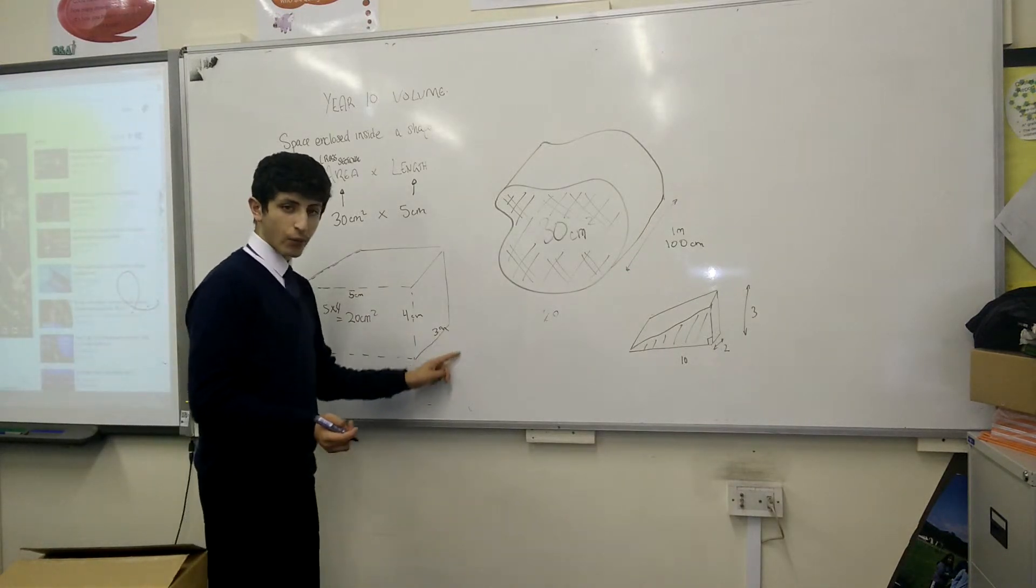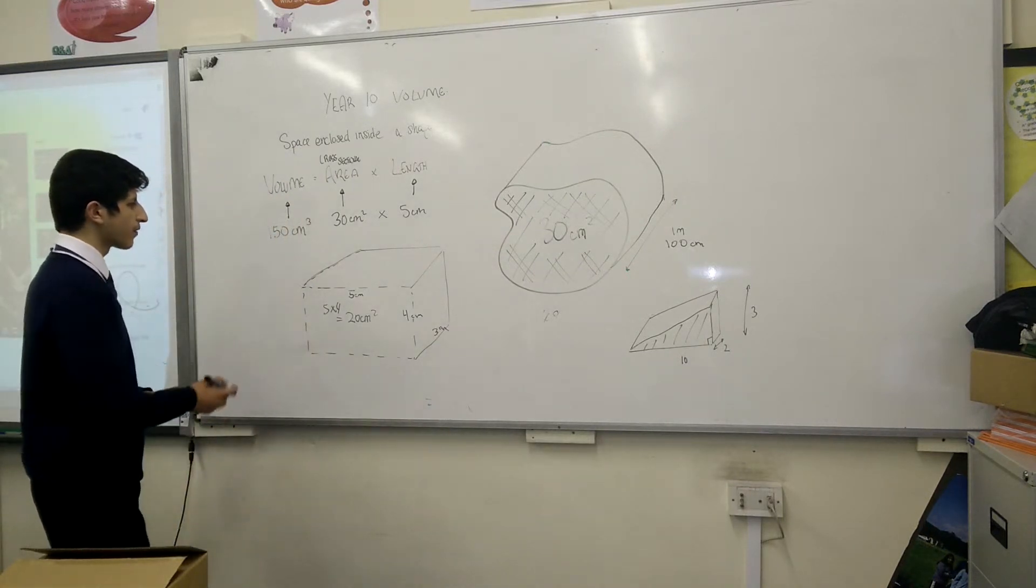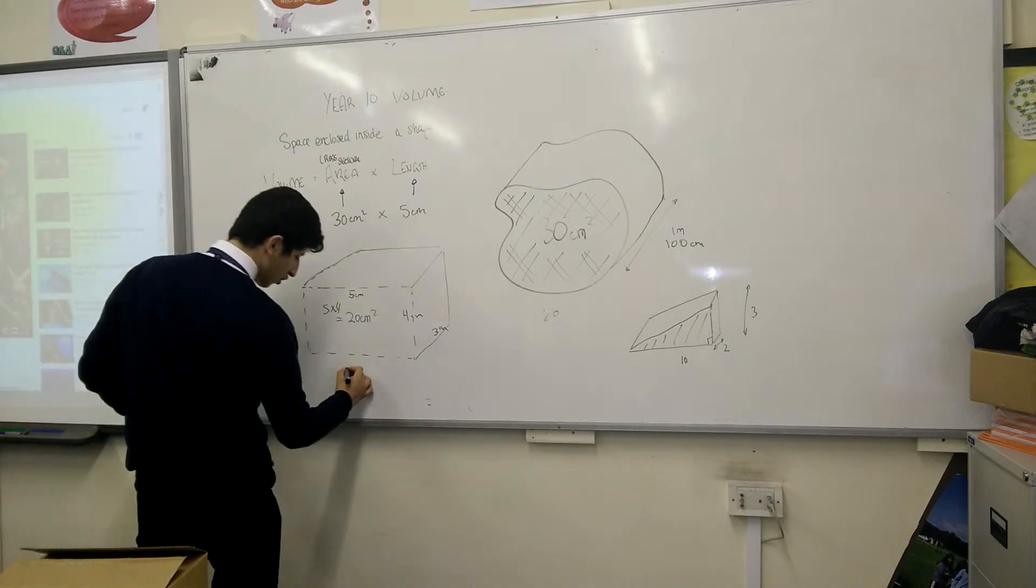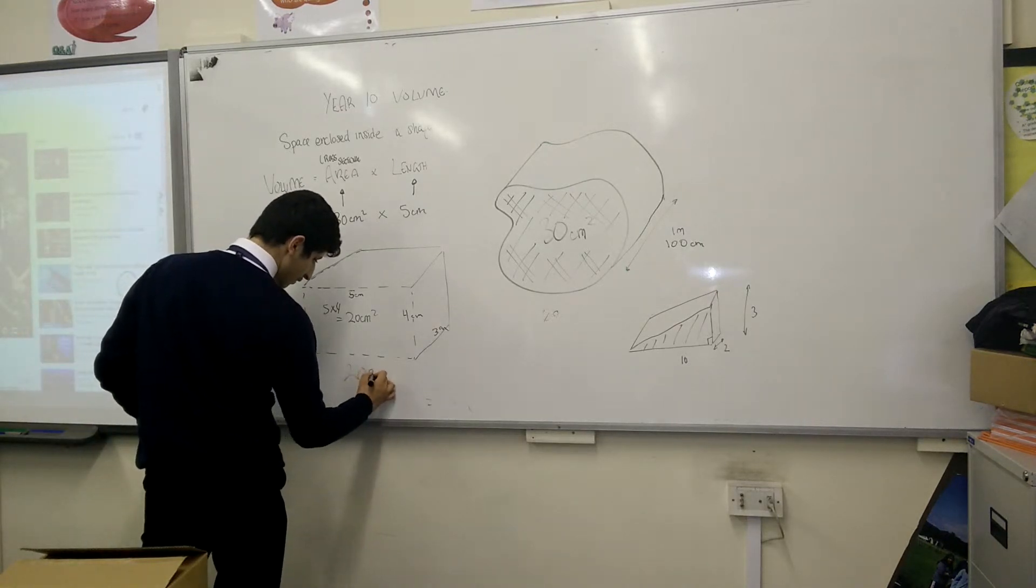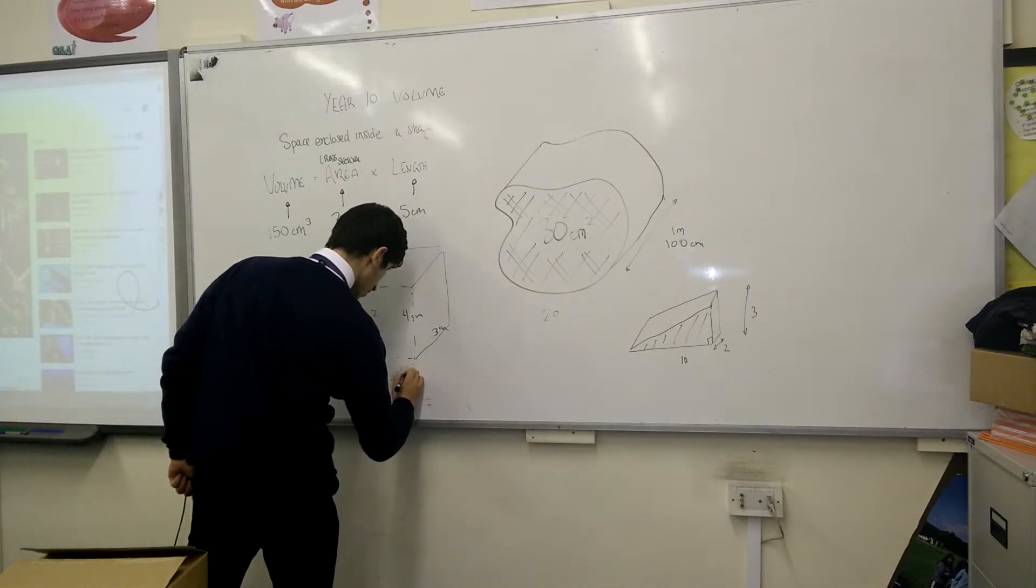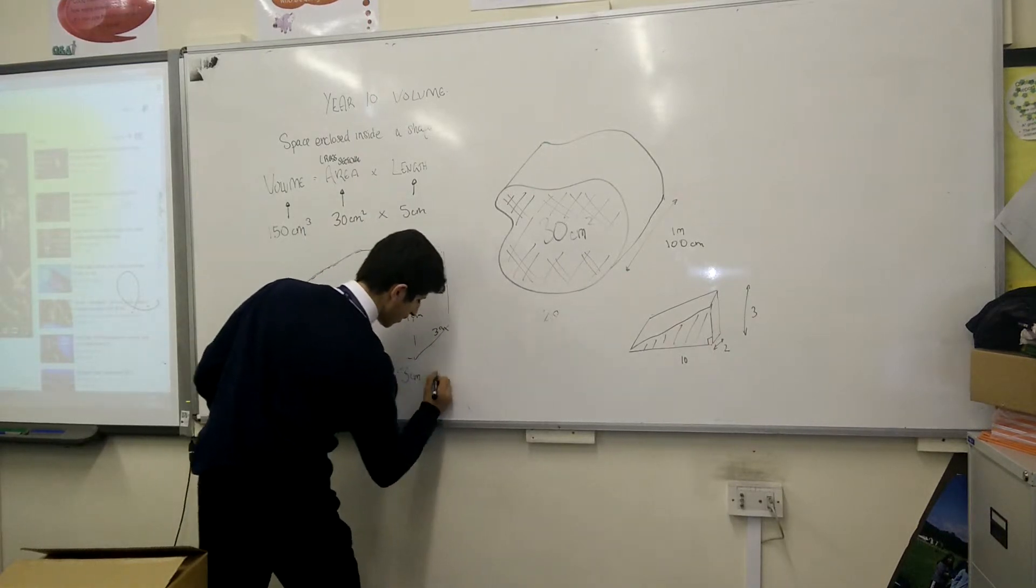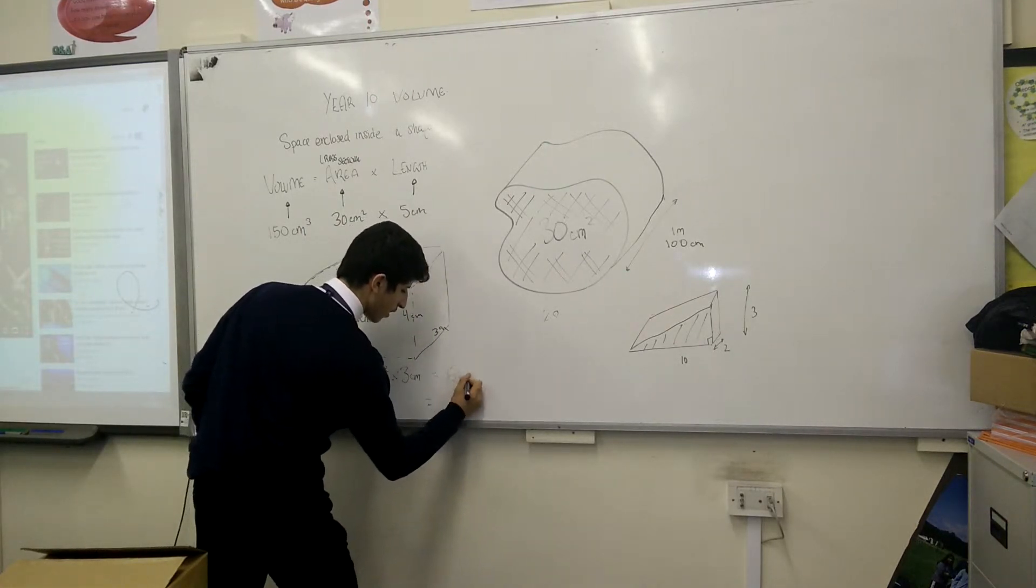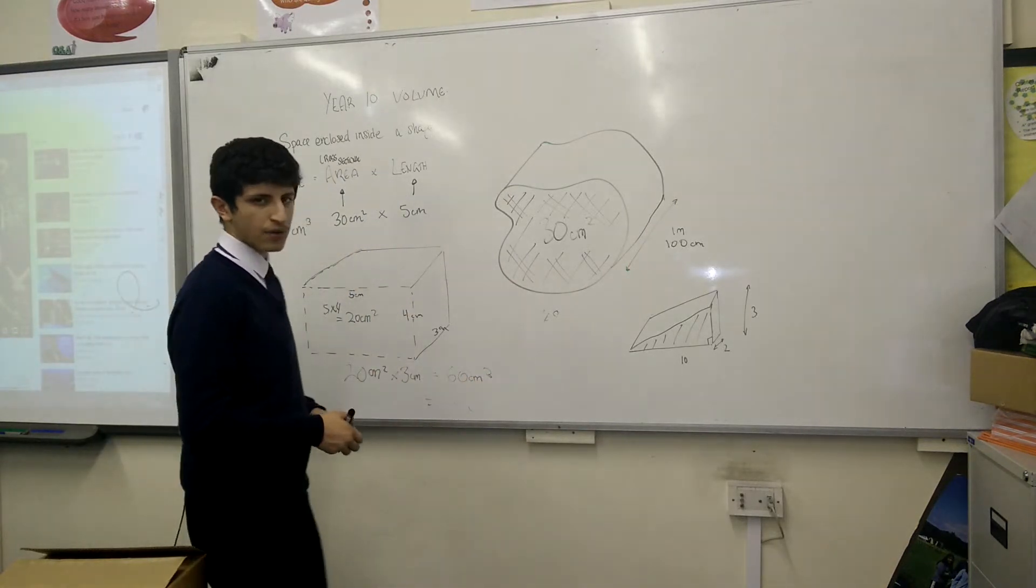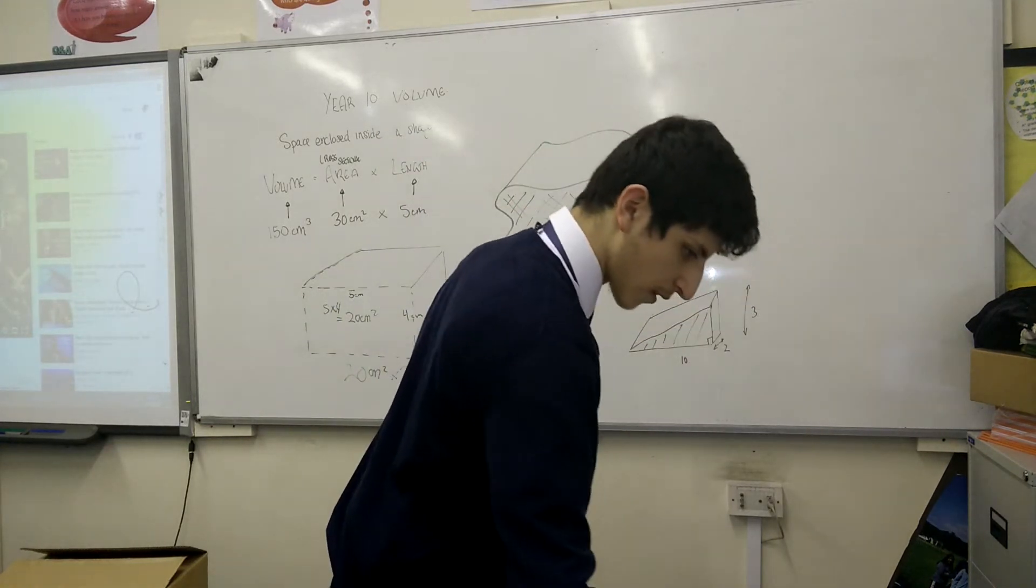Then you have the length of this prism. I'm just going to write in the area. You have twenty centimetres squared. You have three centimetres in length. And that totals sixty centimetres cubed. So this prism here encloses a volume inside it, which is measurable to sixty centimetres cubed.